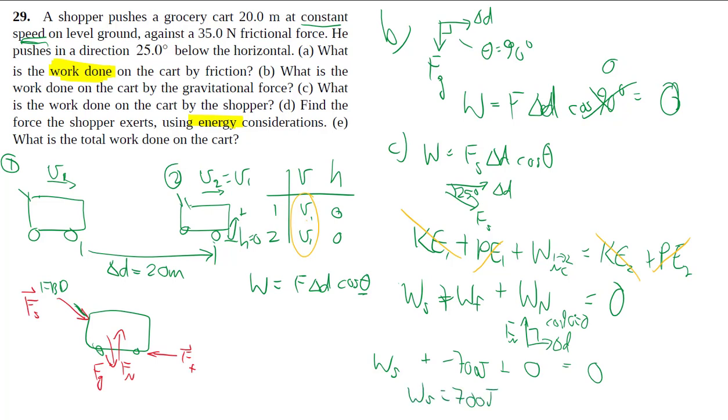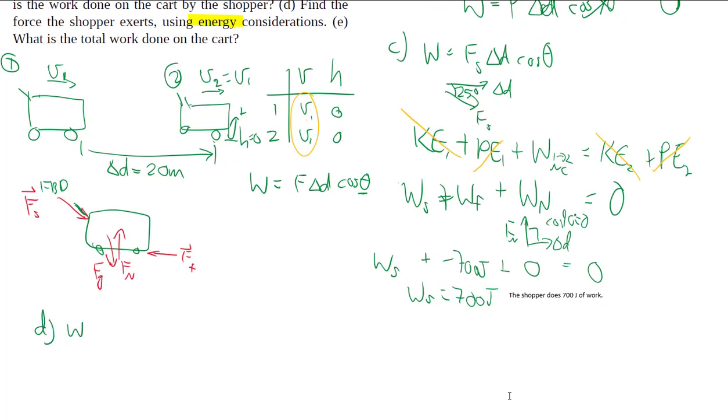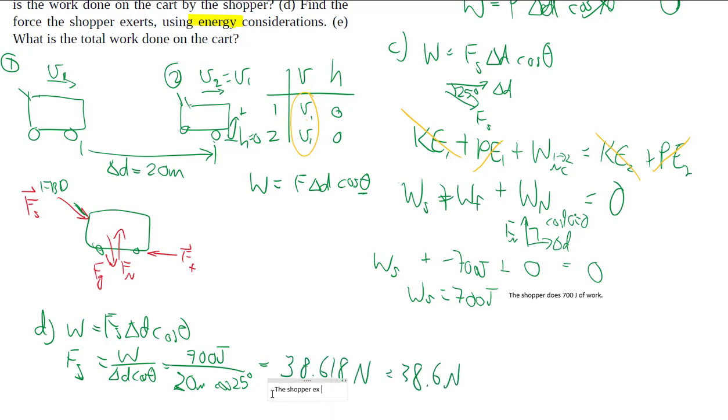So solving, we get 700 joules, which makes sense because in order for you to maintain the same speed, keeping the same energy, it's no surprise that the shopper has to put in the same amount of work that friction is taking out. So now that we have this work term, we can work backwards to find out the force that the shopper exerts. We have joules, which is newton times meter divided by meter, you get newtons back.